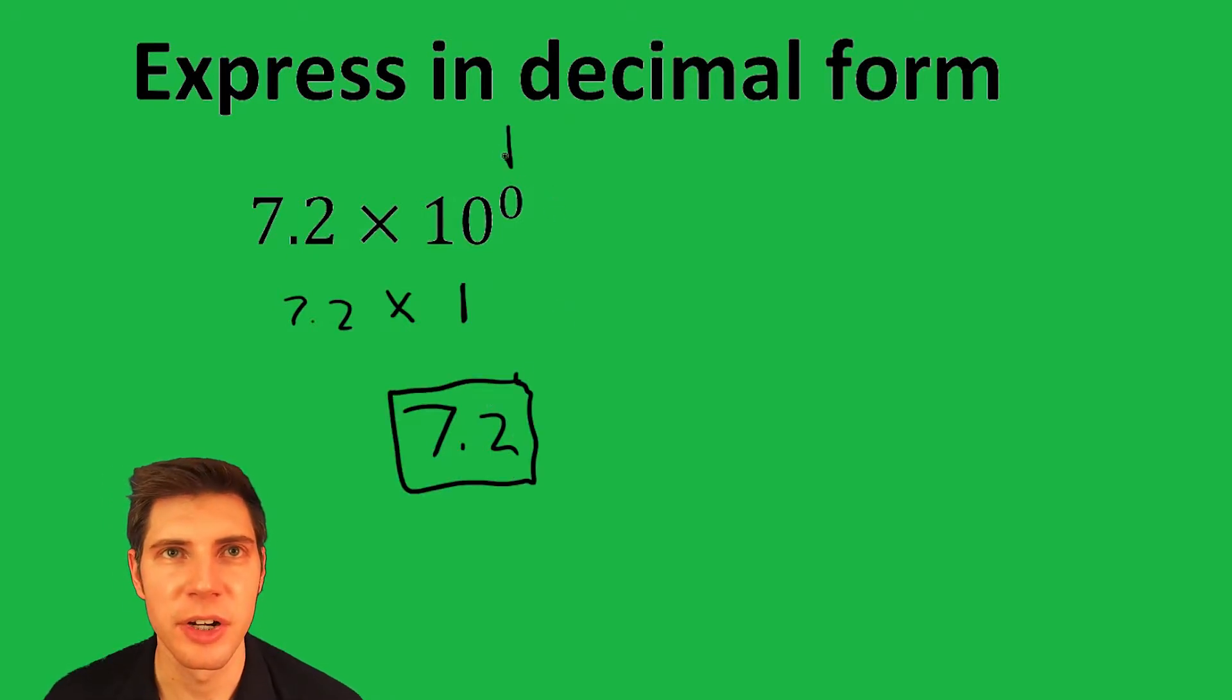Another way to think of it is this 0 right here tells you how much you're going to move the decimal point. We're not going to move it at all, so the answer didn't change. It's just 7.2.